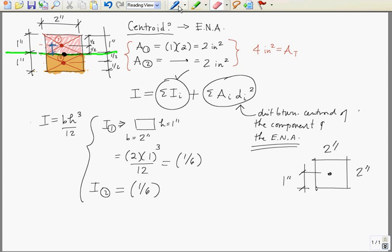Okay. And this distance we can see is 1 half. Same thing down here. We have the distance between the centroid of component number 2 and the elastic neutral axis of the cross section, and this dimension is also 1 half inch.